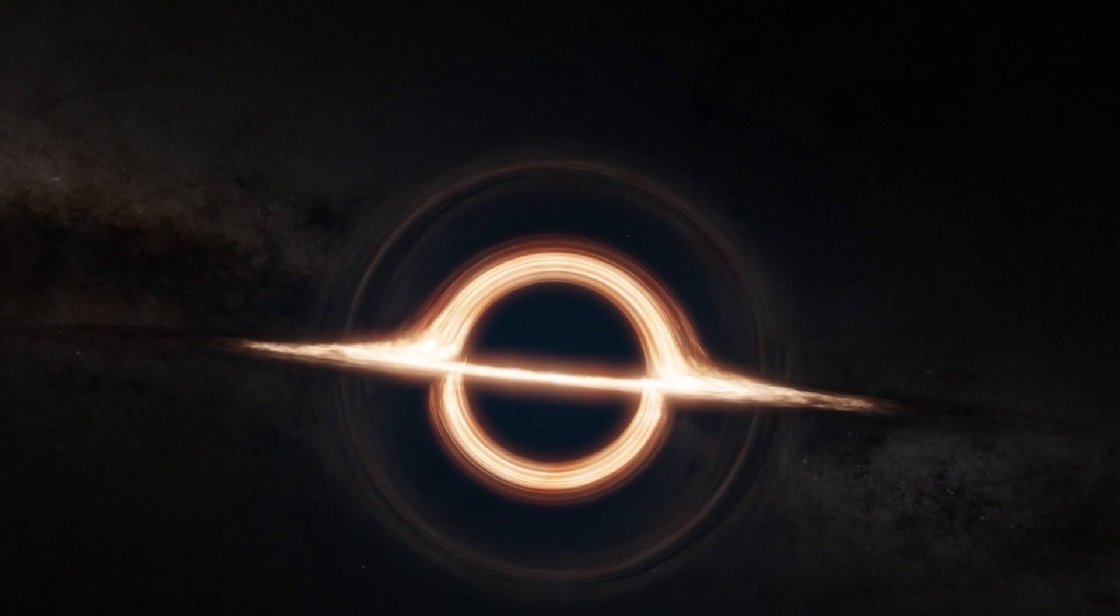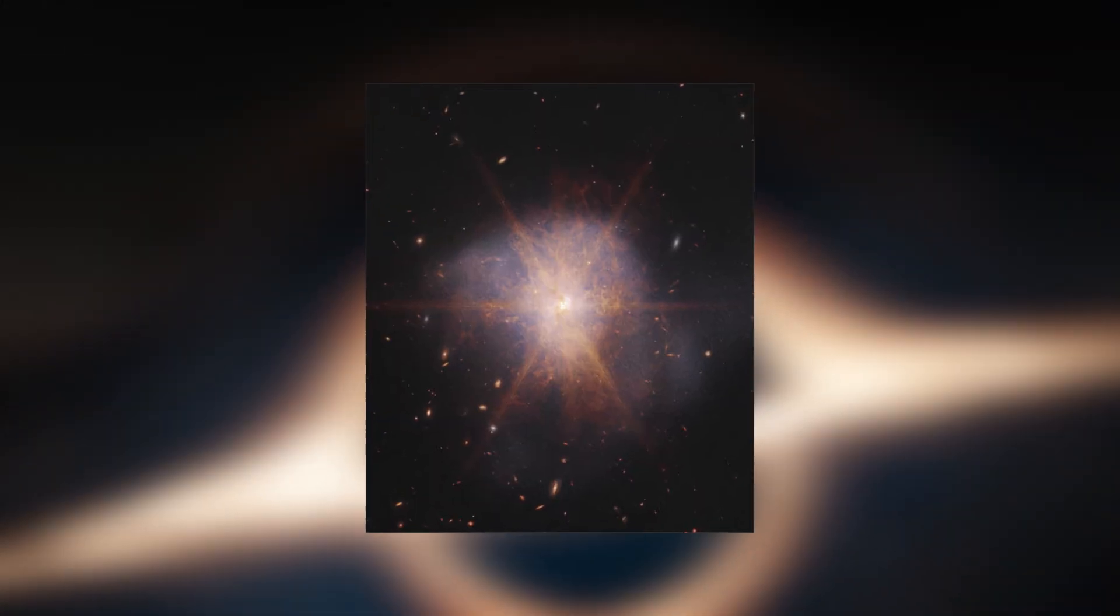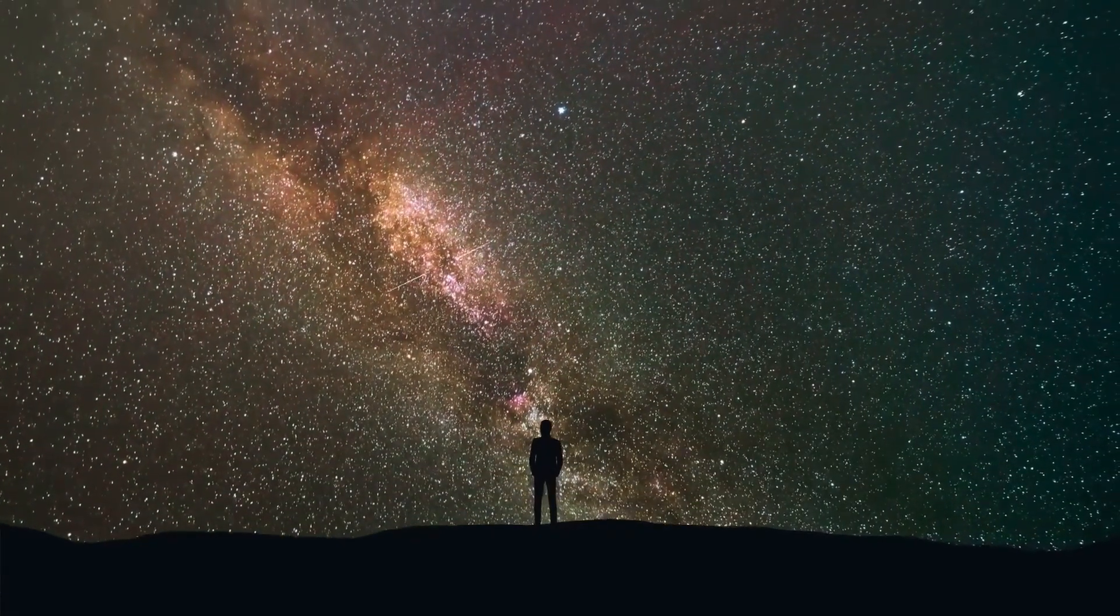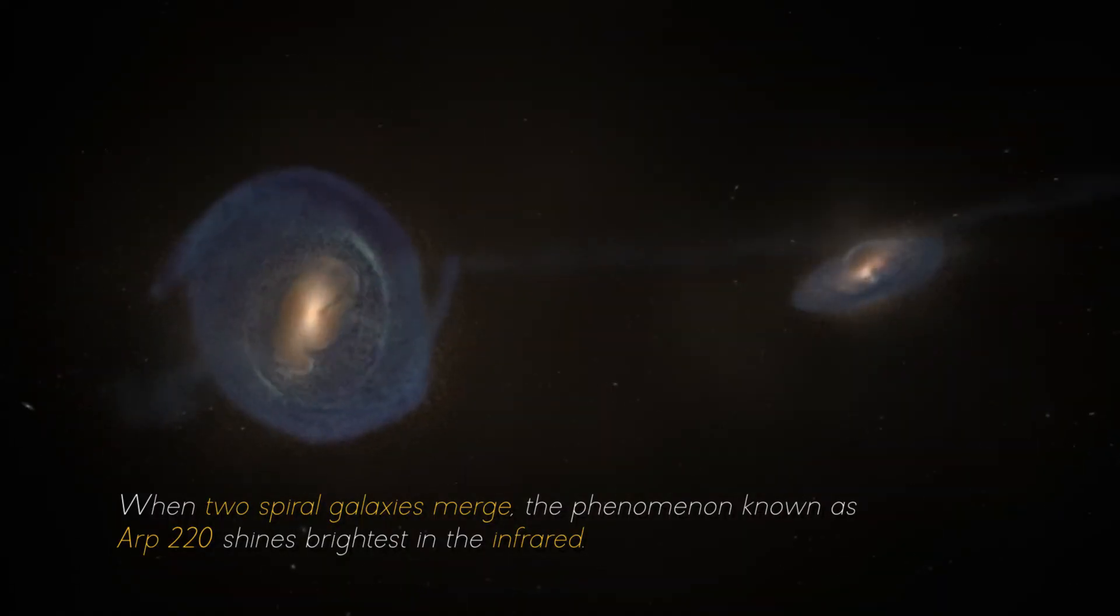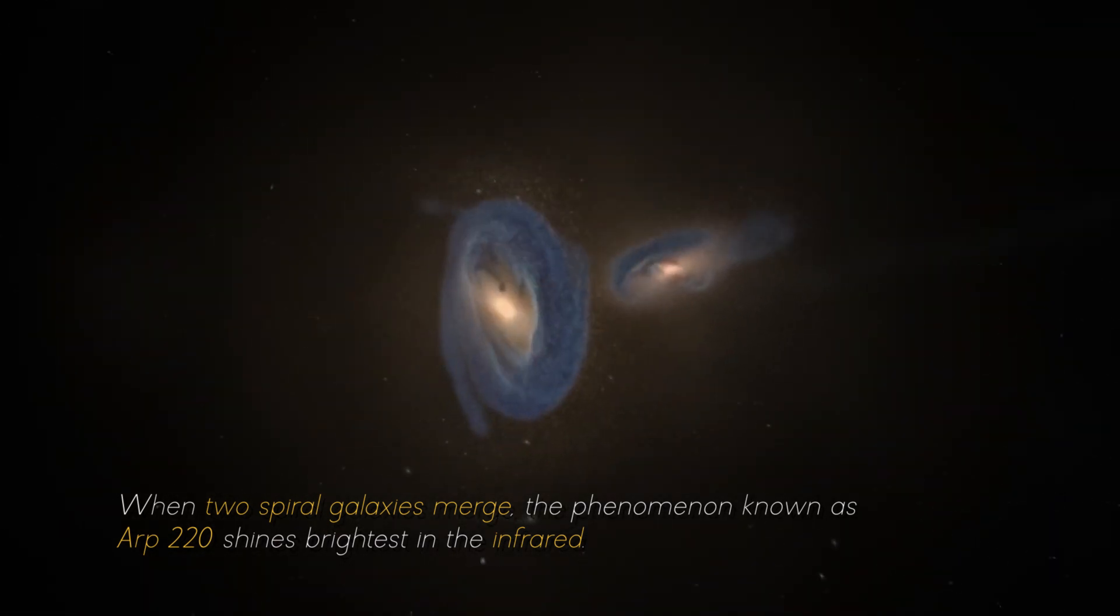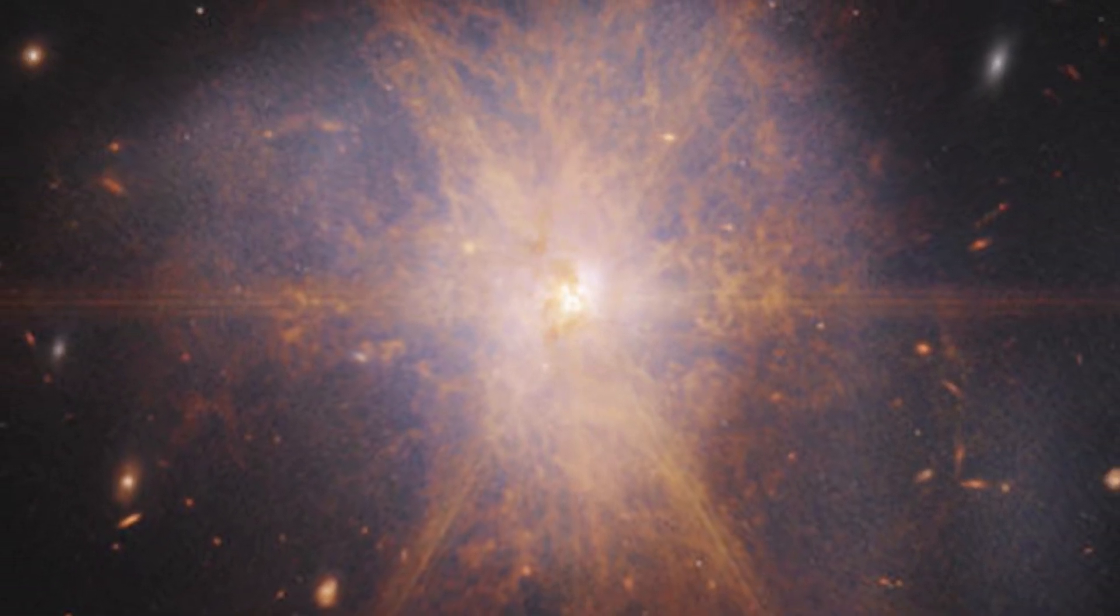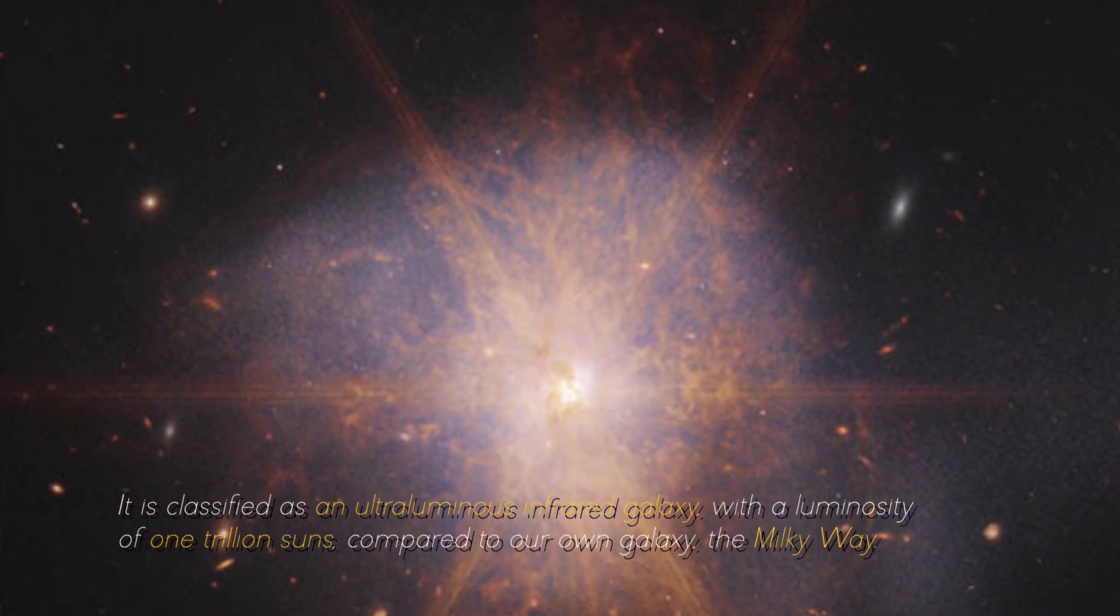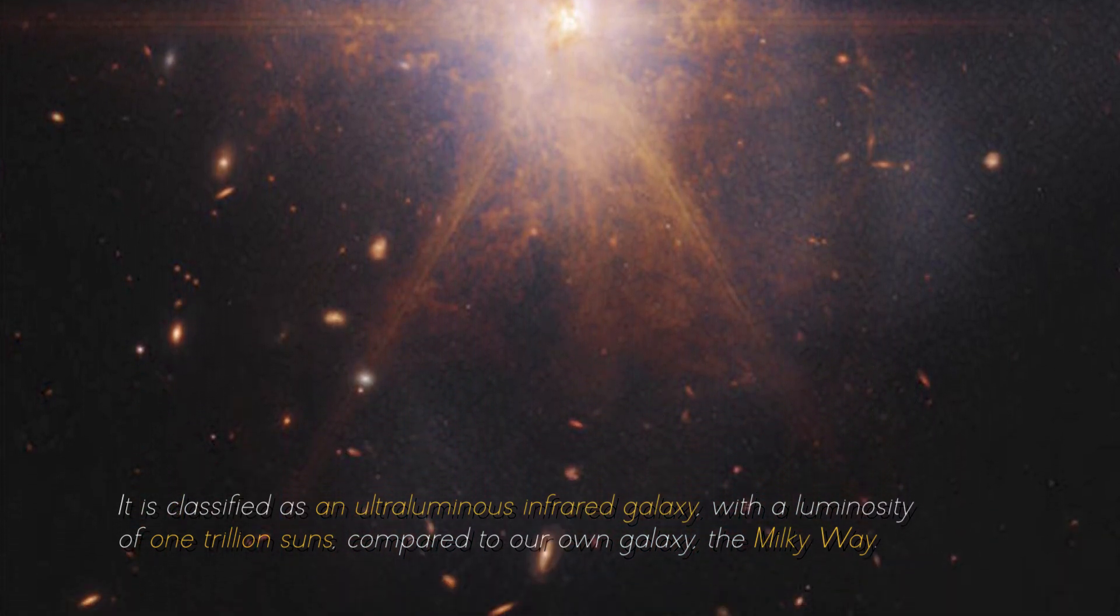NASA has made an exciting announcement about the galactic merger of 220, which was captured by the James Webb Space Telescope. This impressive galactic merger can be seen shining among other galaxies in the night sky. When two spiral galaxies emerge, the phenomenon known as ARP 220 shines the brightest in the infrared, making it perfect for observation by the James Webb Space Telescope. It is classified as an ultra-luminous infrared galaxy, with a luminosity of 1 trillion suns compared to our own galaxy, the Milky Way, which has a much lower luminosity of about 10 billion suns.